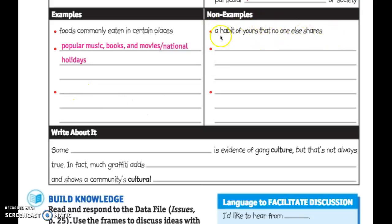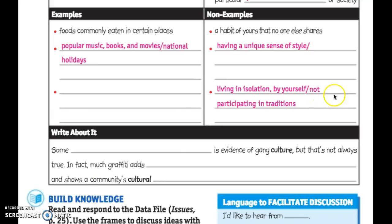Let's go over to the non-examples. A habit of yours that no one else shares — like chewing on your pencil — that's not part of culture, that's just you being a little weird. Having a unique sense of style, like blue streaks in your hair or baggy clothes, that's your unique style and not part of a culture because it's not what a group of people are doing. Living in isolation by yourself means you're not part of a culture. Another non-example would be not participating in traditions — if everyone else is celebrating Thanksgiving and you say 'nah,' that's not being part of the culture.